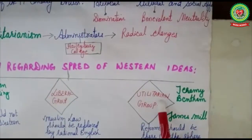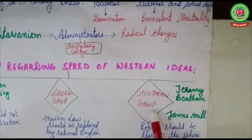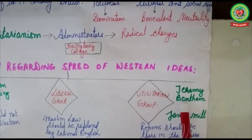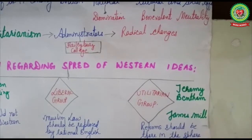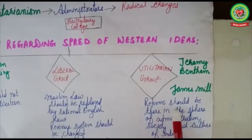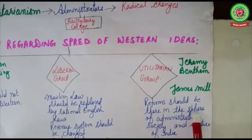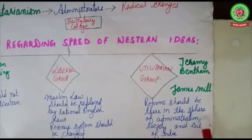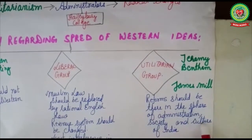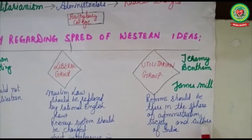The utilitarian group, which was led by Jeremy Bentham and James Mill, believed that reform should be introduced in every sphere of administration — in the society, culture, and religious life of India as well.